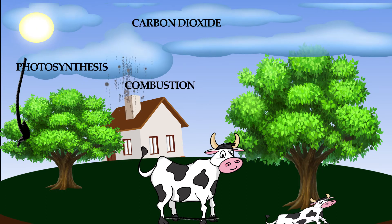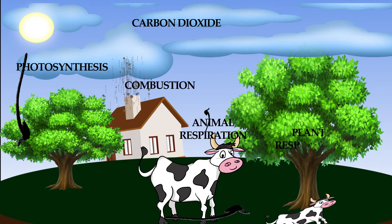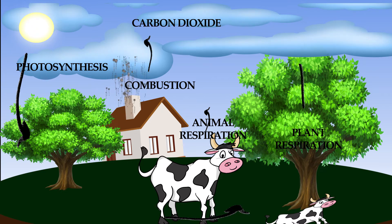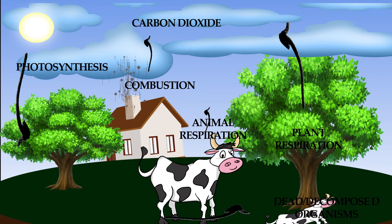We release a lot of carbon dioxide when our parents drive their cars or when people work in factories. That is why the earth has become warmer, as we release carbon dioxide and experience a loss of carbon balance.